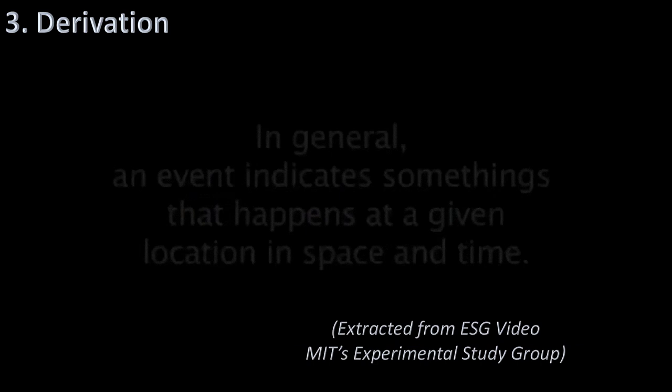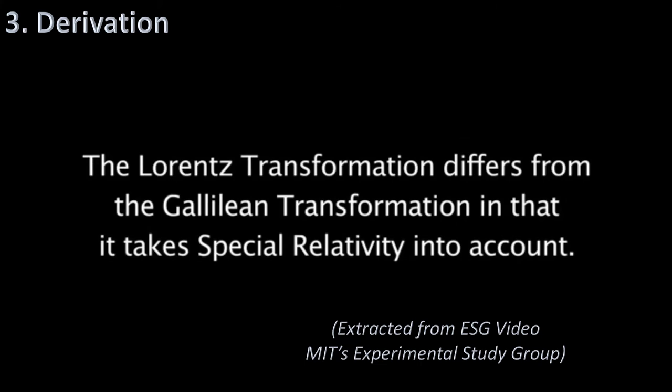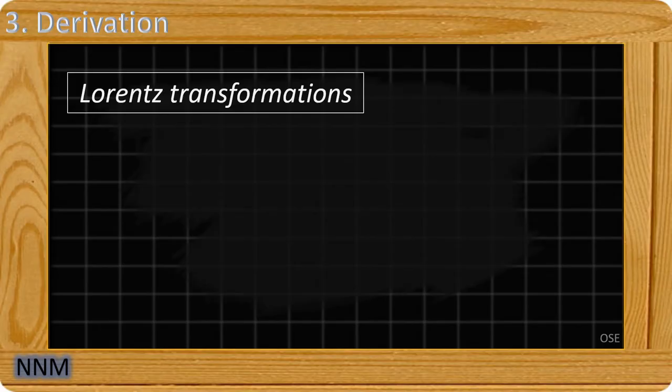The Lorentz transformation transforms between two different reference frames when one is moving with a constant velocity with respect to the other. It differs from the Galilean transformation in that it takes special relativity into account.